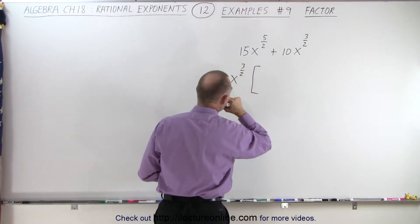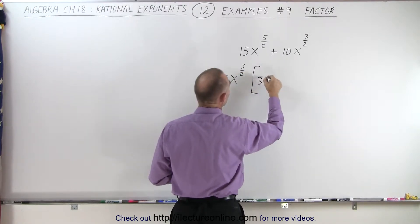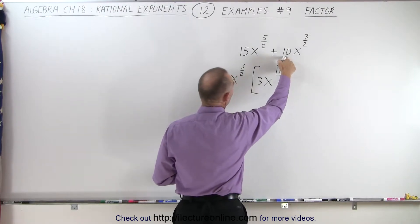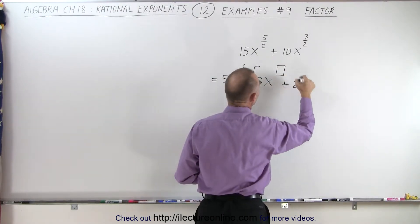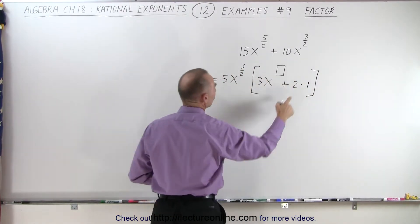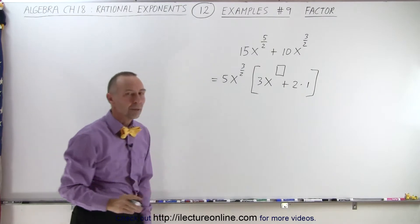And that's going to leave us with, well, when we factor out a 5, we get 3x to some new exponent plus, when we factor 5 from 10, we get 2, and x to the three halves would be, of course, times 1, because 1 times x to the three halves gives us back x to the three halves.